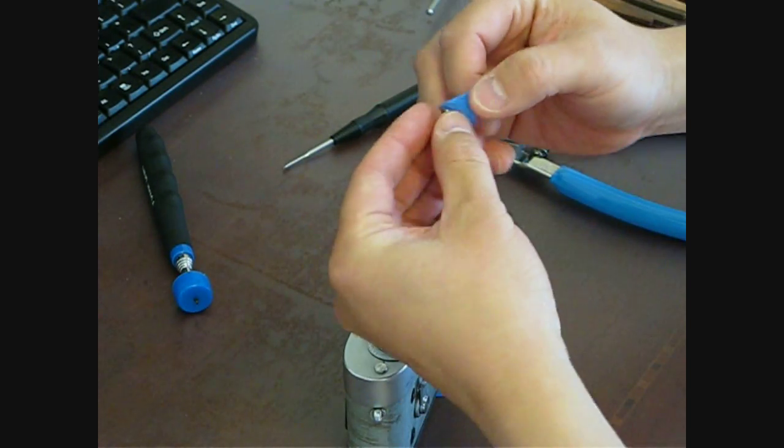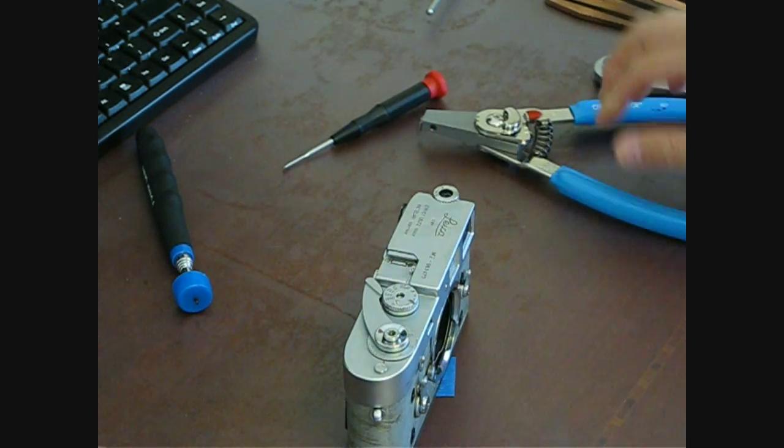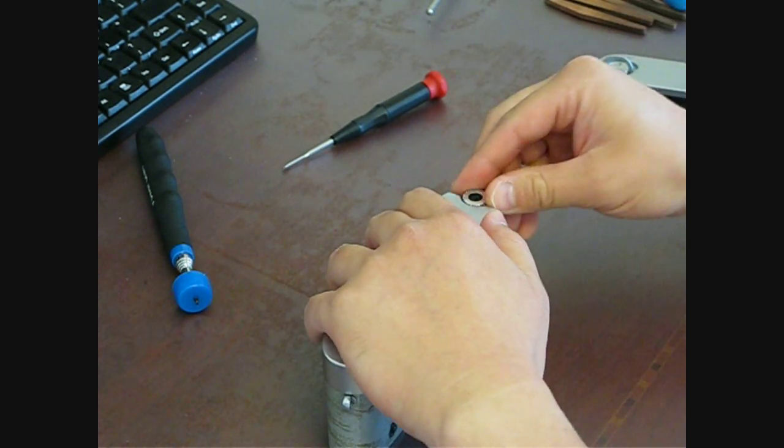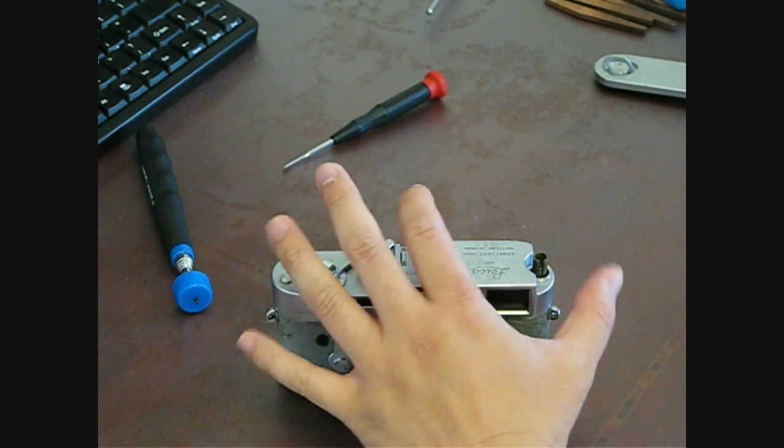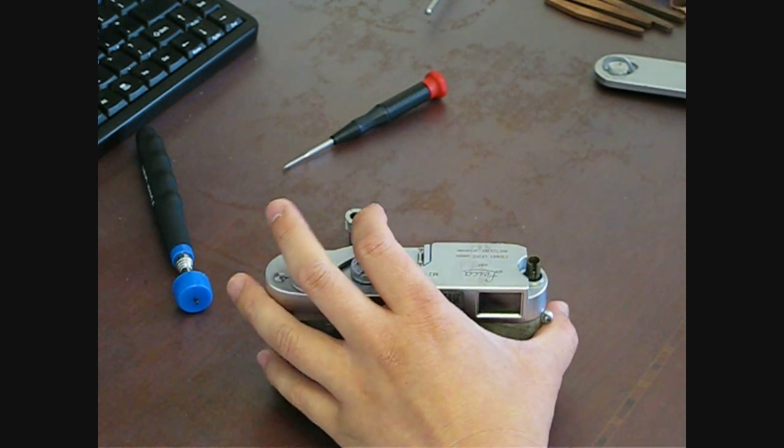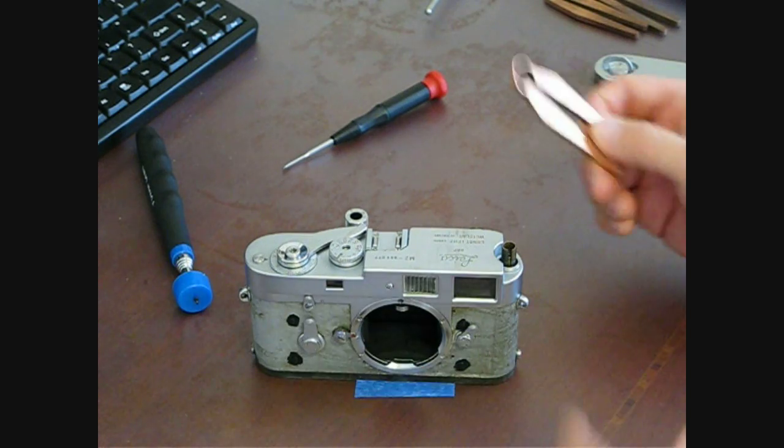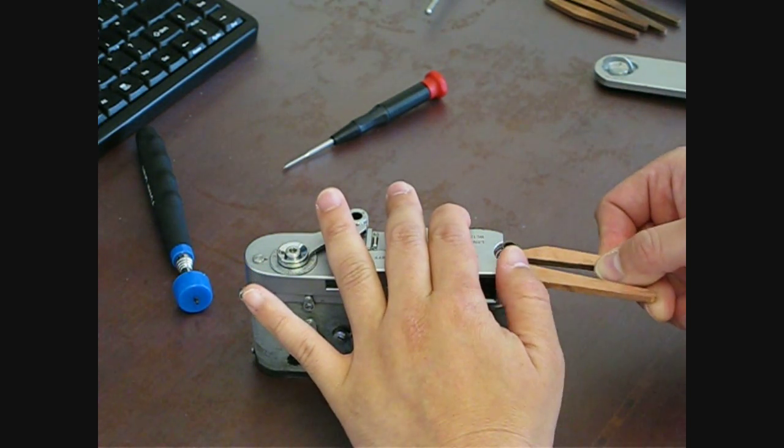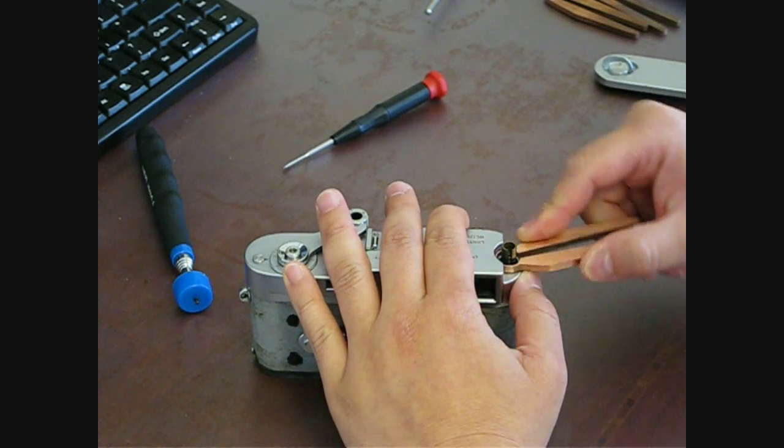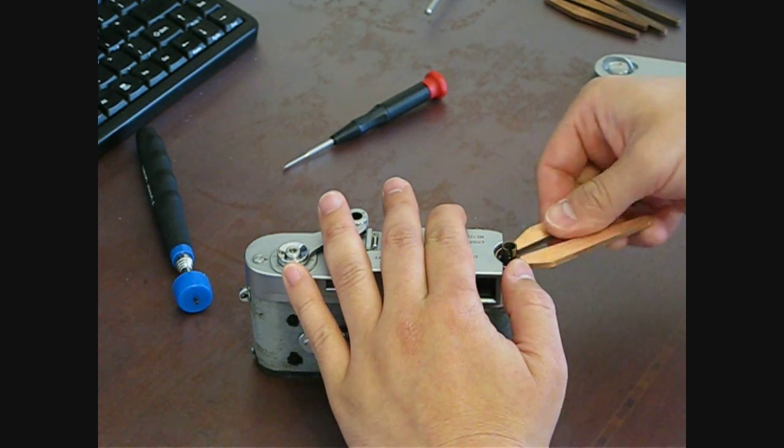Okay, so there it is. The next step, I'm going to go ahead and take the rewind knob off. And you'll need a wrench like so, or a clamp, in order to get that retaining ring off, which is in the inside, which I'm working off now.